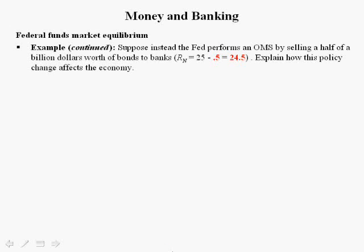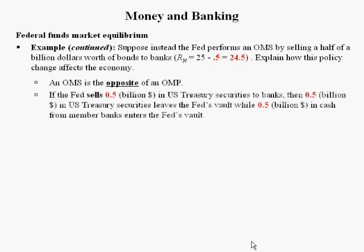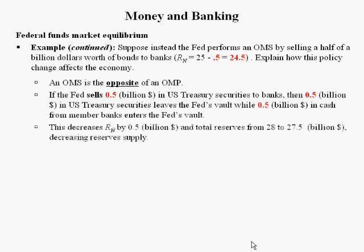Open market operations include an open market purchase and an open market sale. In this example, we're going to demonstrate how an open market sale works — it basically works in the opposite direction of an open market purchase. If the Fed sells $0.5 billion in Treasury securities to banks, then $0.5 billion in Treasury securities leaves the Fed's vault while $0.5 billion in cash from member banks enters the Fed's vault. This decreases non-borrowed reserves by $0.5 billion and total reserves from $28 billion to $27.5 billion — a decrease in reserve supply. The equilibrium Federal Funds rate rises while the money supply falls.